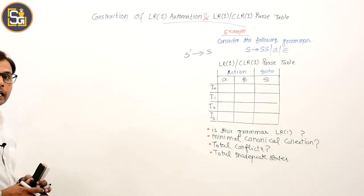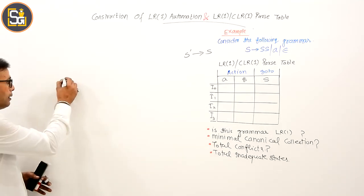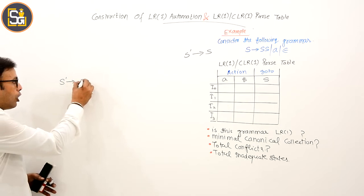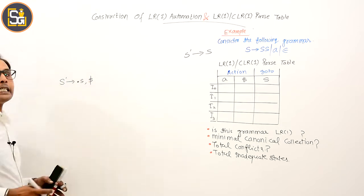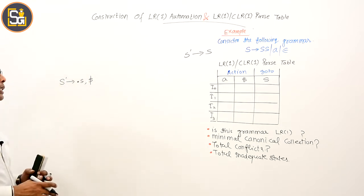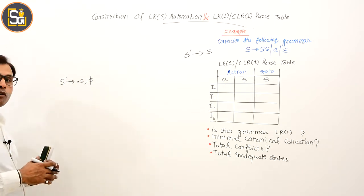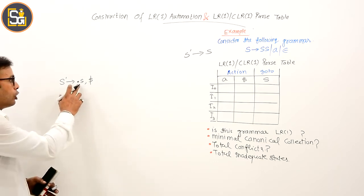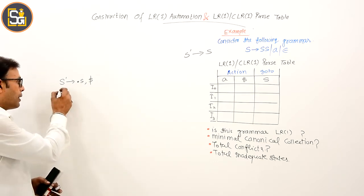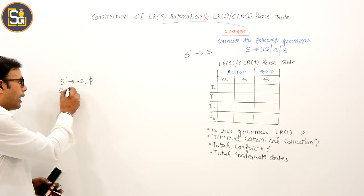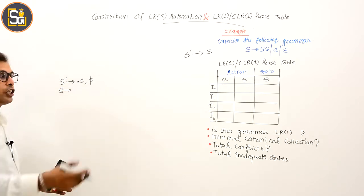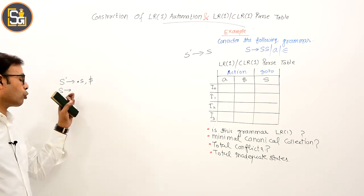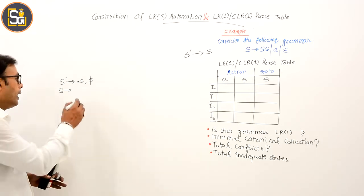अब इसके लिए हम S' derives dot S, dollar — इस LR1 item से LR1 automation का construction start करेंगे. Dot के बाद capital S non-terminal है, तो S की जो productions हैं उनके respective LR1 items इसके closure में लिखे जाएंगे.